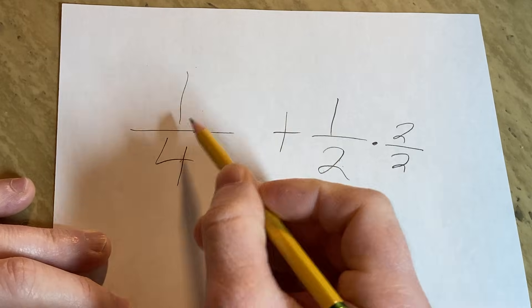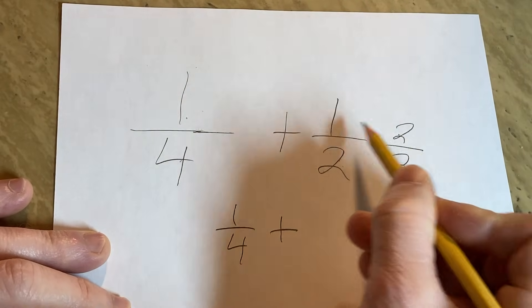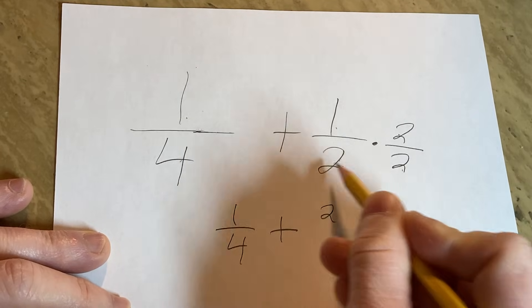So now what you can do is you get 1 over 4 plus, and then you can multiply 2 times 1 is 2, 2 times 2 is 4.